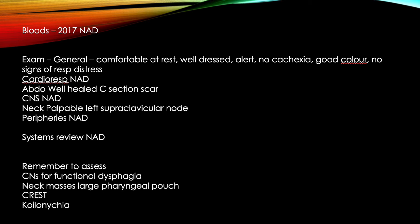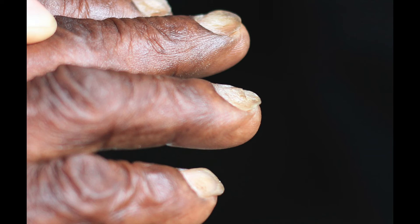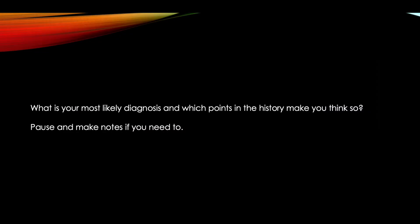CREST is another word for the limited cutaneous form of systemic sclerosis, also known as LCSS. It's a connective tissue disorder with five main features: calcinosis, Raynaud's, esophageal dysmotility, sclerodactyly, and telangiectasia. It's really rare but worth noting for exams. Koilonychia refers to spoon-shaped nails, which can be a sign of hypochromic anaemia, usually iron deficiency anaemia.